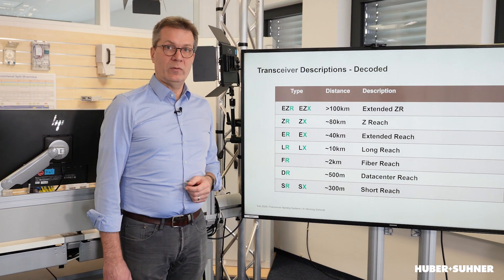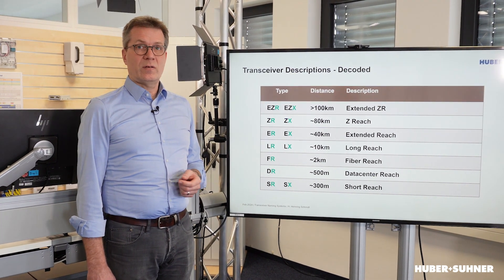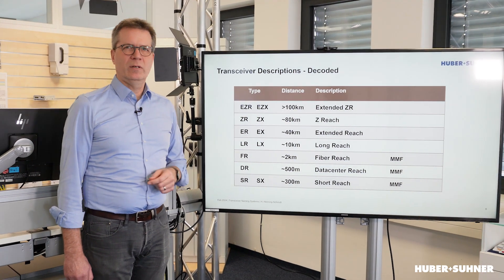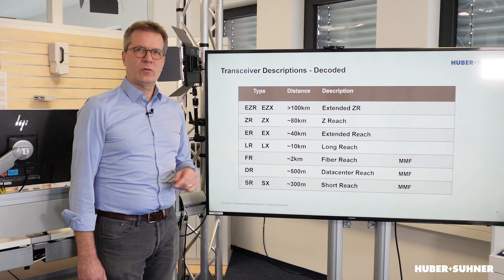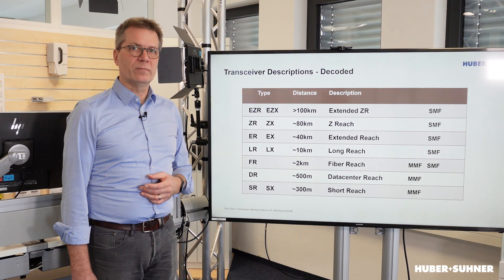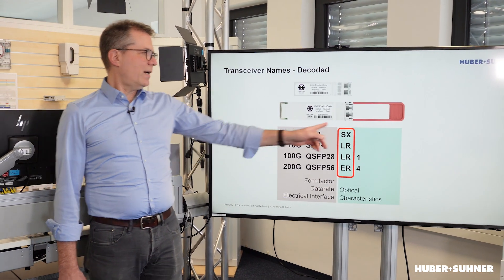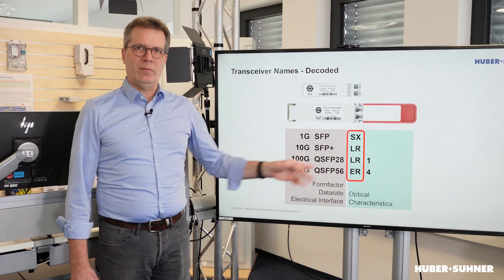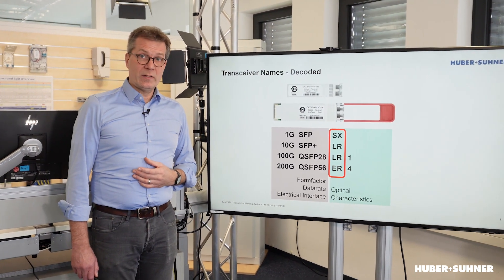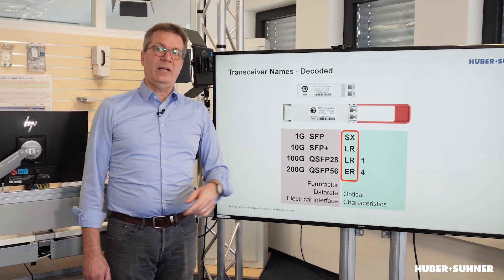The main thing to take away is that achievable distance also describes the fiber type that is commonly used. Multi-mode fiber is usually used for shorter distances, while single-mode fiber is what you need for longer distances. This naming scheme, as part of the transceiver names, describes the achievable distance. There are still some numbers in these names, and I will talk about those in the next video.